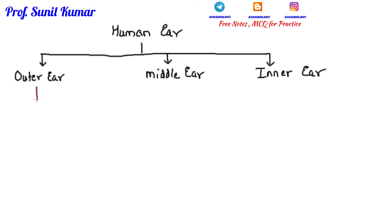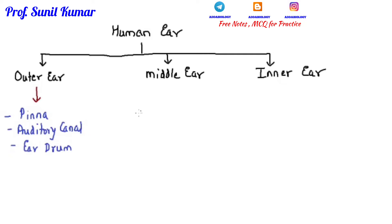What are the various components of the outer ear? The outer ear includes: first, the pinna; second, the auditory canal; and third, the eardrum, which is also known as the tympanic membrane.